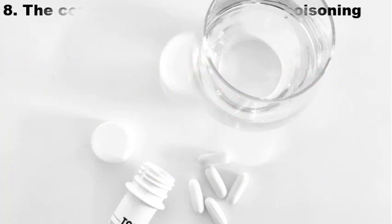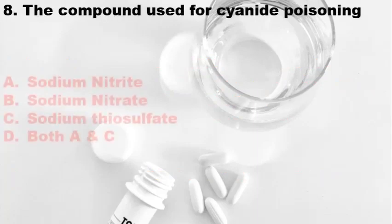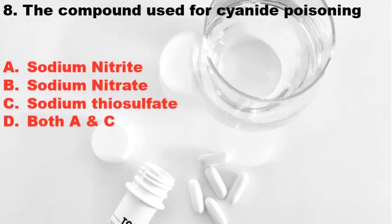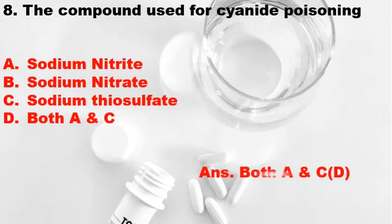Question number 8: The compound used for cyanide poisoning — Option A: Sodium nitrite, Option B: Sodium nitrate, Option C: Sodium thiosulphate, Option D: Both A and C. The correct answer is Option D, Both A and C.